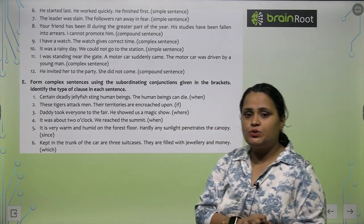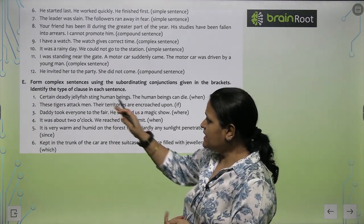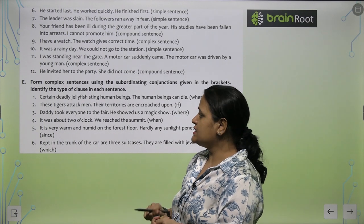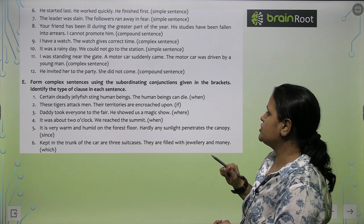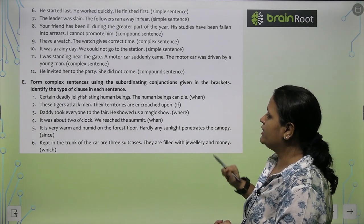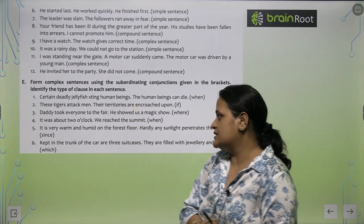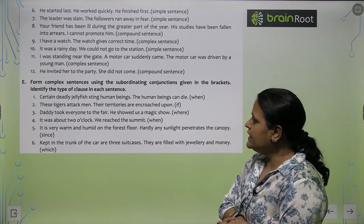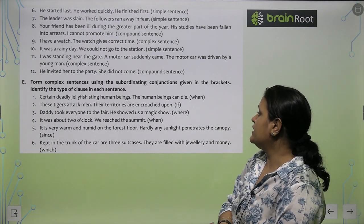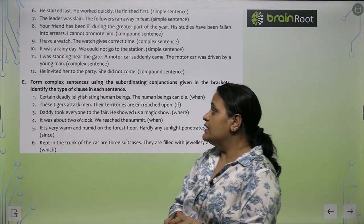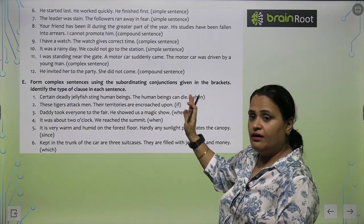So dear students, jo bhi points bache hain, try to do yourself. Now see Exercise E — from complex sentences, using the subordinating conjunction given in the bracket, identify the type of clause in each sentence. 'When certain deadly jellyfish sting human beings, the human being can die.' Combined: 'When certain deadly jellyfish sting human beings, they can die.'